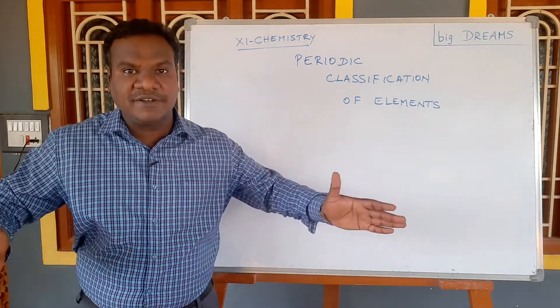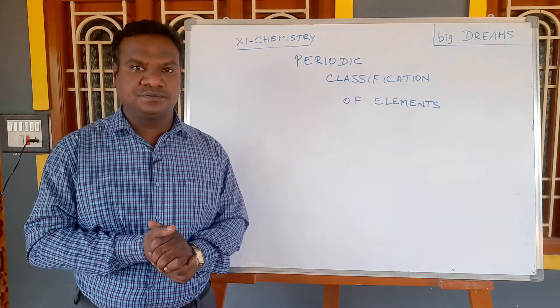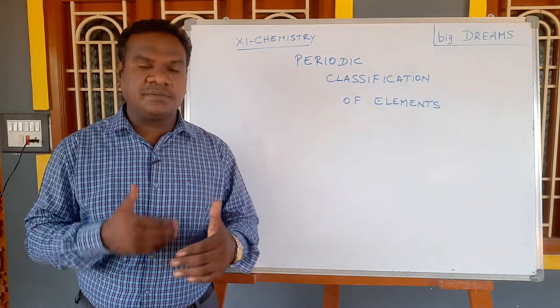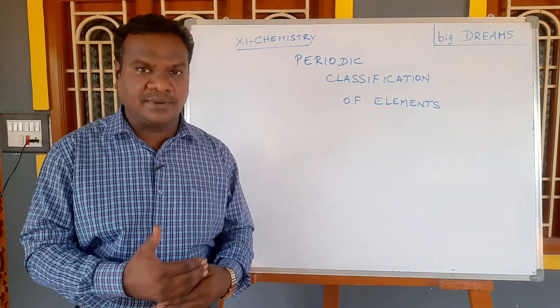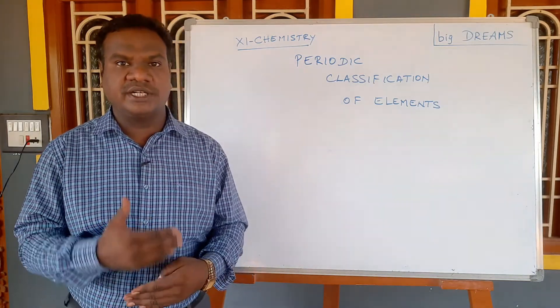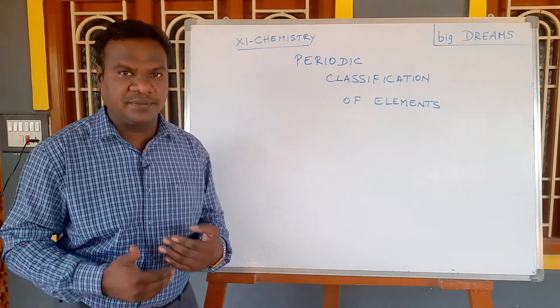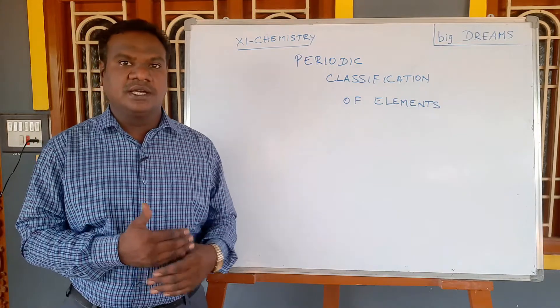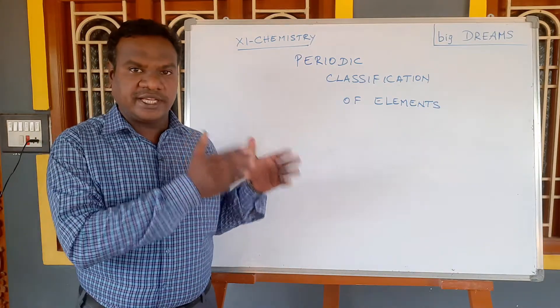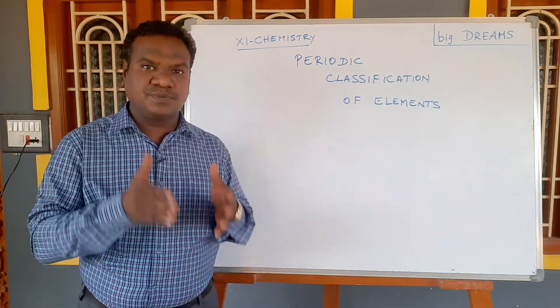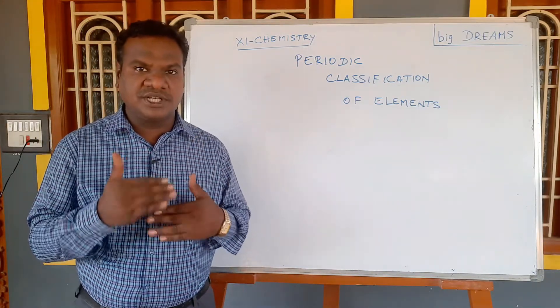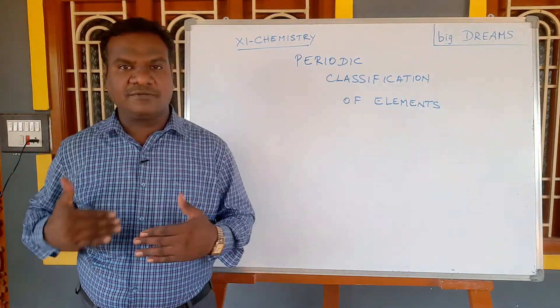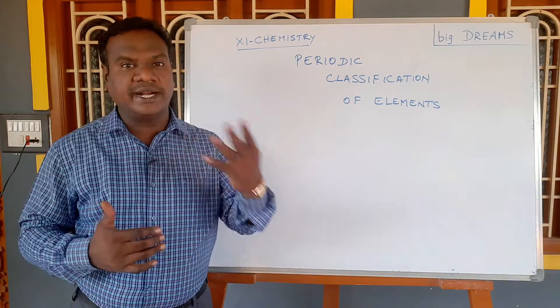Elements are classified into groups. If you read the Modern Periodic Table from 10th grade, you will know the four categories: S Block Elements, P Block Elements, D Block Elements, and F Block Elements.